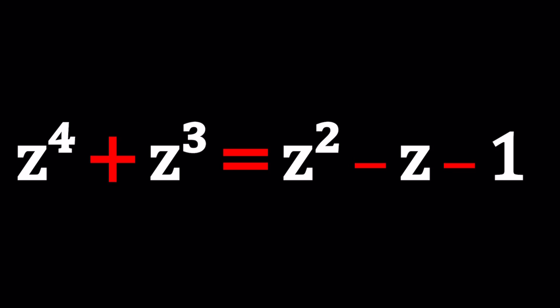We have z to the fourth power plus z cubed equals z squared minus z minus one. Did you recognize the expression on the right hand side? Is that a special form? What about the left hand side? Can we factor both sides so we get a common factor?